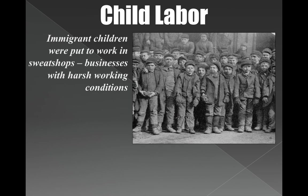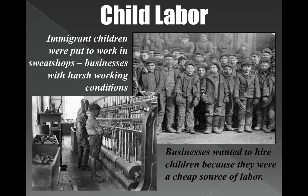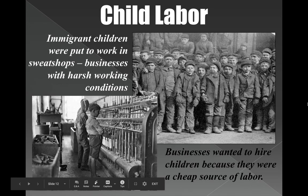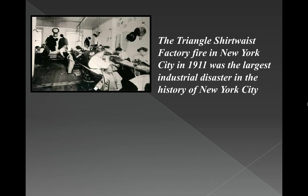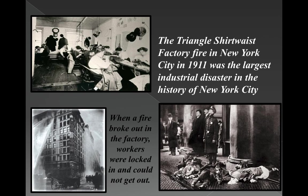Another issue that needed reform was child labor. A lot of immigrant children were put to work in sweatshops or businesses with harsh working conditions. Businesses wanted children to work for them because they could pay them very little money — so you get no school and a lot of children working in really harsh conditions. Along with all this comes industrial accidents, like the Triangle Shirtwaist Factory fire in 1911 — the largest industrial disaster in New York City history. Women were locked inside when the building caught fire because owners were afraid they were stealing fabric, so women had to jump from the seventh and eighth floors, and many of them died.